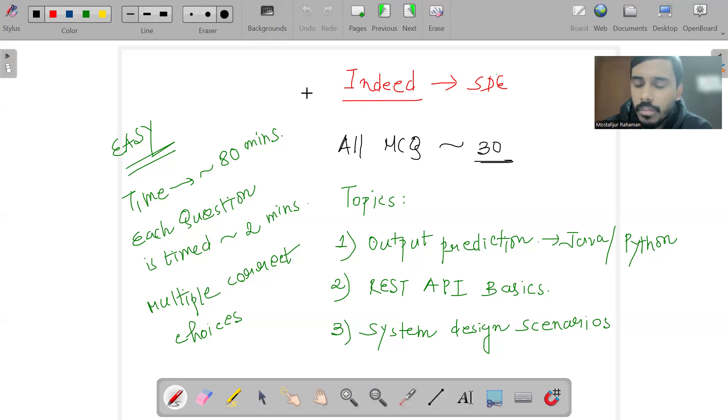They mentioned REST API basics within the OA - like what kind of methods in terms of POST, GET, PATCH. For example, if you're going to create a new resource in your system, what kind of method would you utilize - whether that's PATCH, POST, etc.